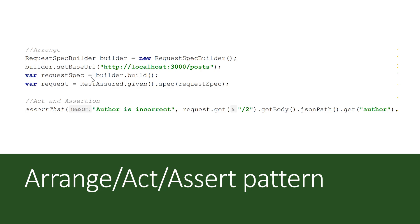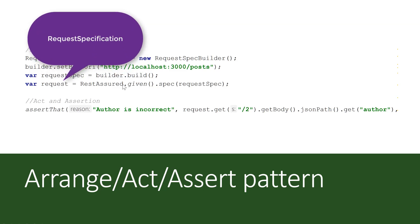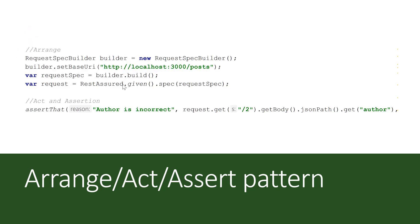The Arrange option uses something called the RequestSpecBuilder class. This class has methods like setBaseUri and build. The setBaseUri method sets the URL we pass into our application — either the full URL to the port, or just the domain name, with the relative path passed later. We can also set the content type and then build the whole RequestSpecBuilder.